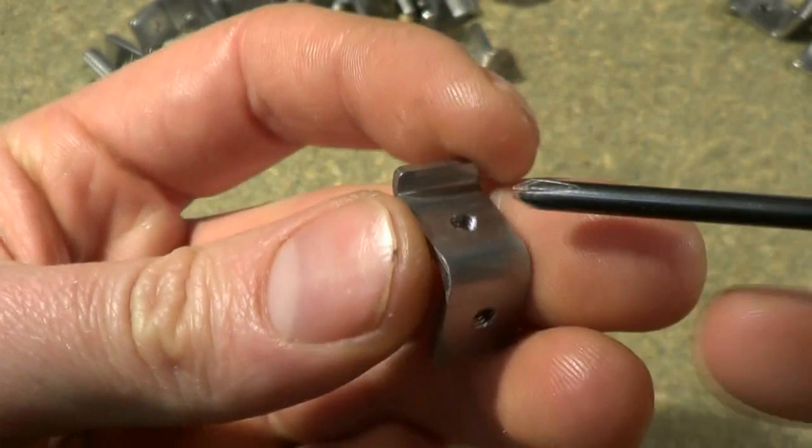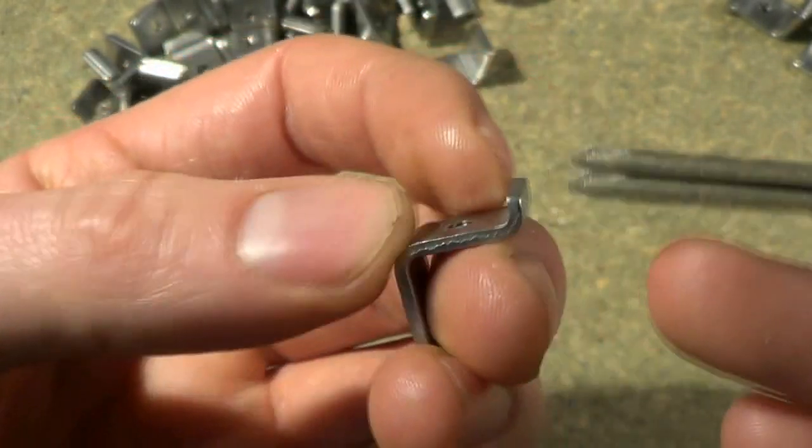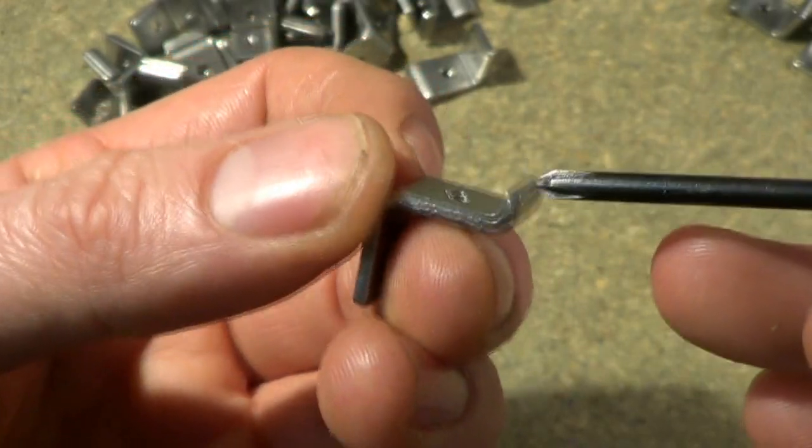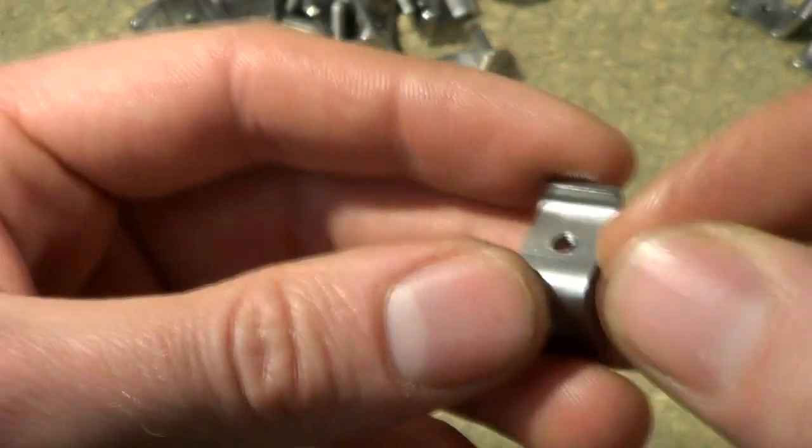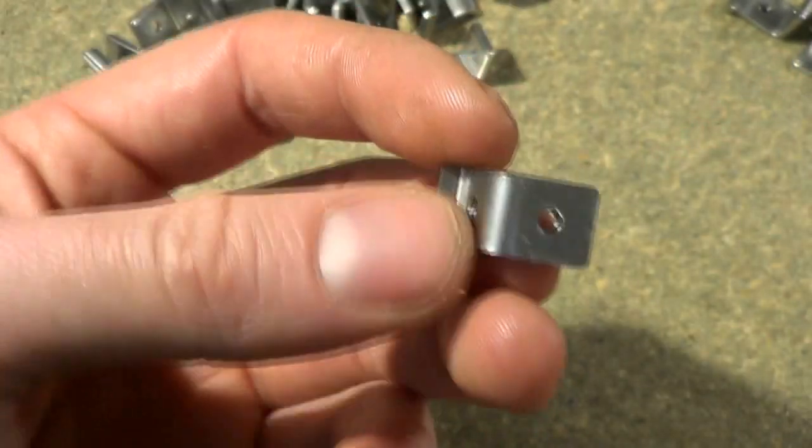They've got two threaded M3 holes in them, and there's also a little bent up tab here that is very useful for stopping the bracket from spinning around when you're trying to tighten one of the screws.